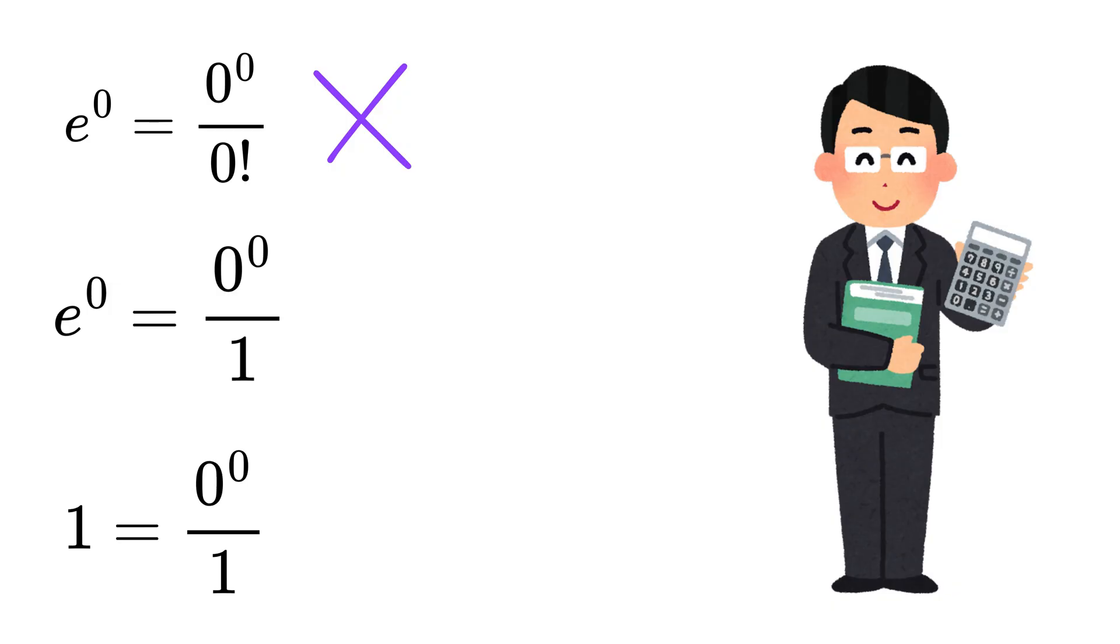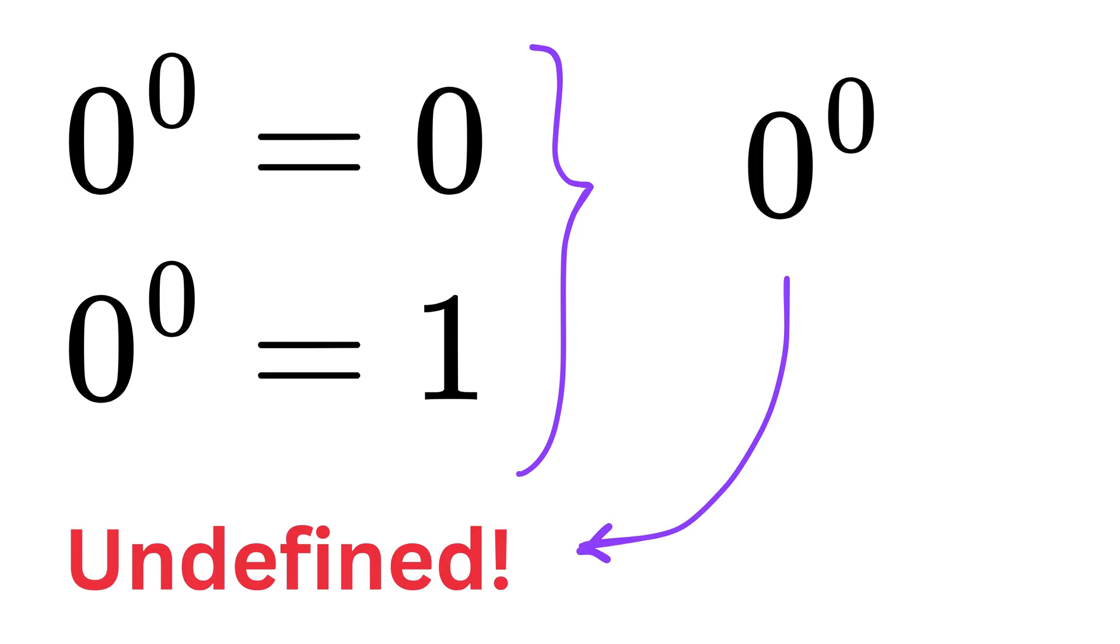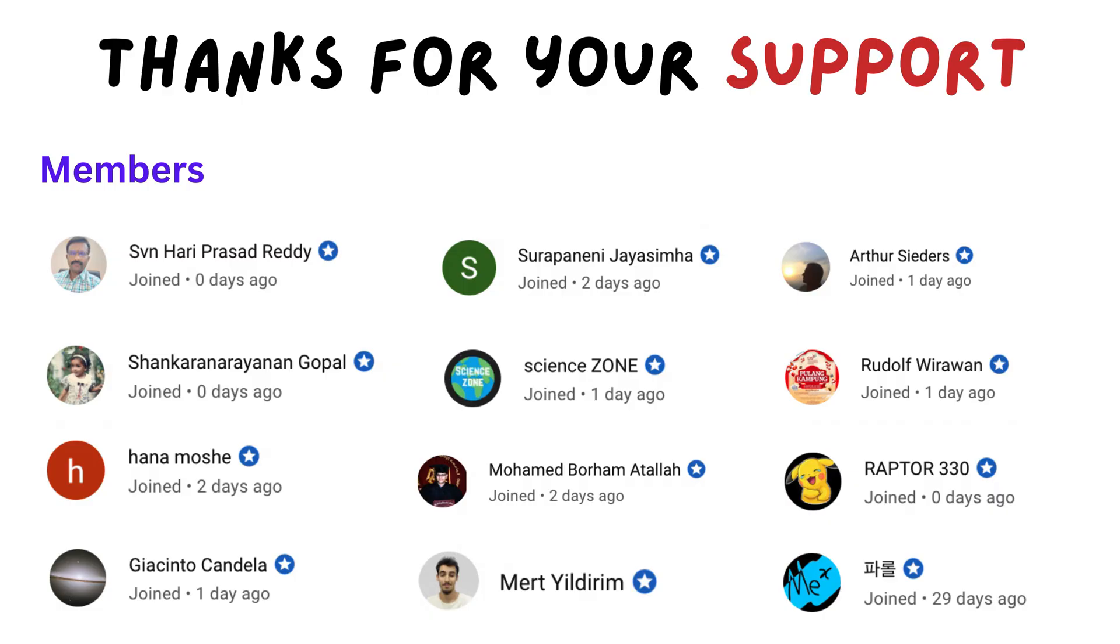So it's not like the calculator is right or wrong. It's just that in some places, defining it as one is more convenient. But deep down, in pure maths, where precision and logic matter more than convenience, zero raised to zero is still undefined because it just doesn't settle into one clear answer.